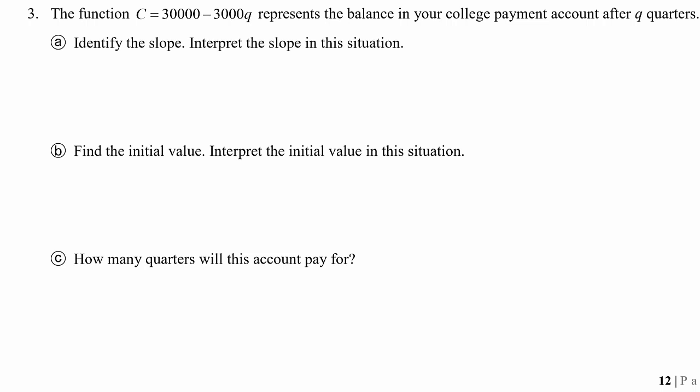Identify the slope, interpret the slope in this situation. Let's look at our input variable, which is Q quarters. So Q represents the number of quarters that you've been in college. And then our output variable is this capital C, and that represents the balance in your college payment account.